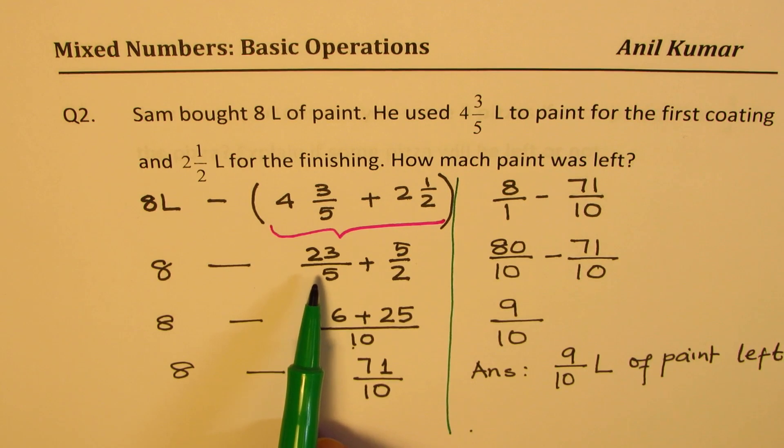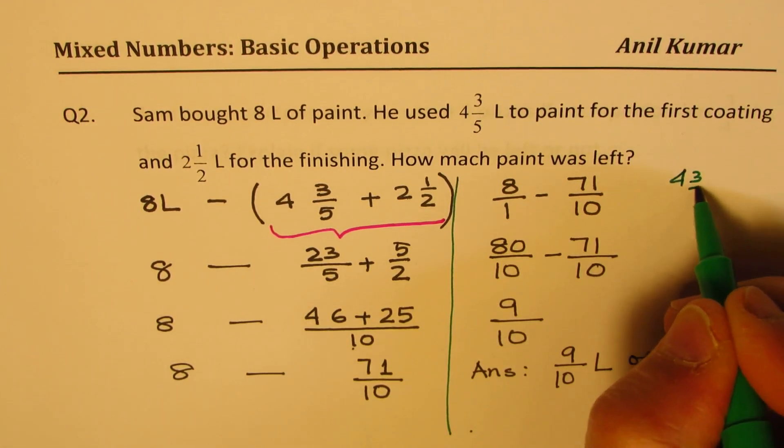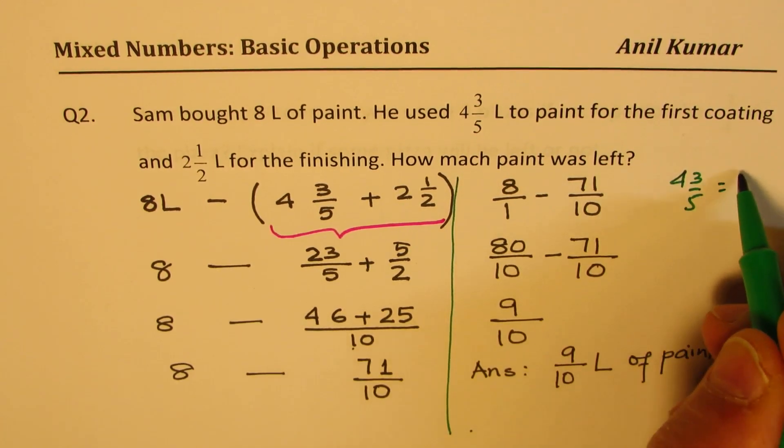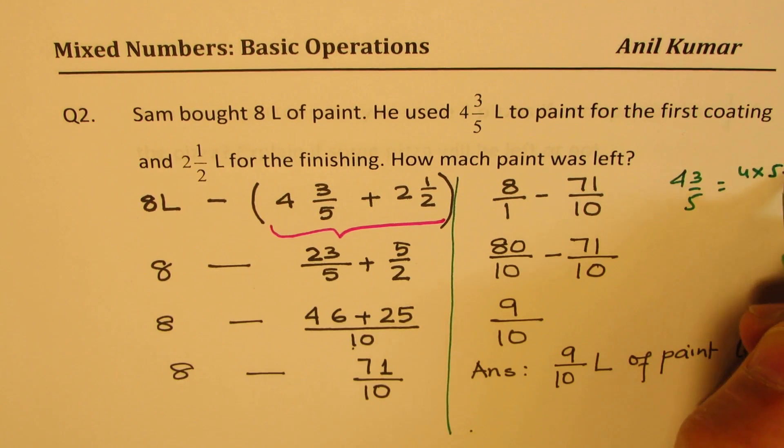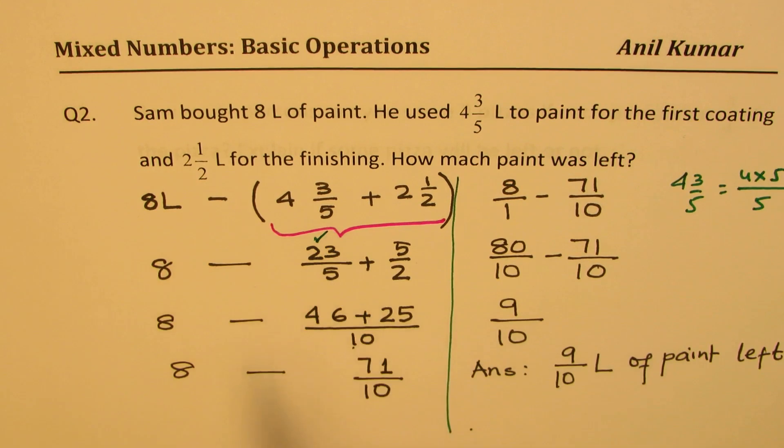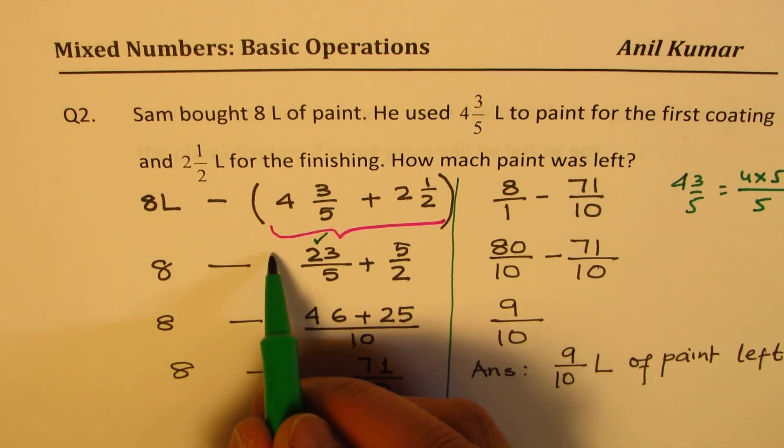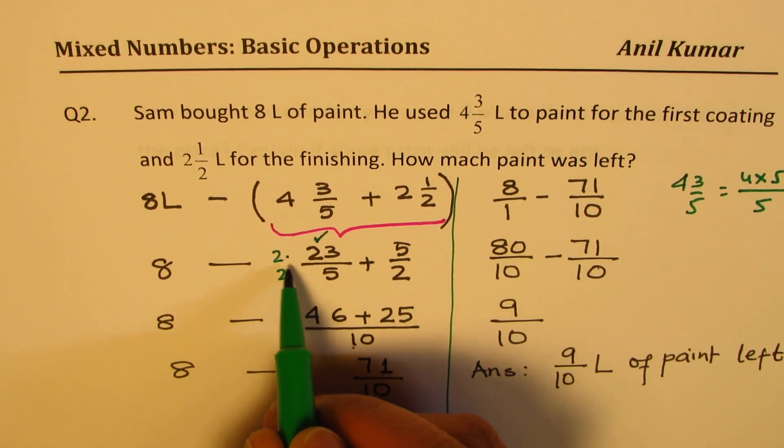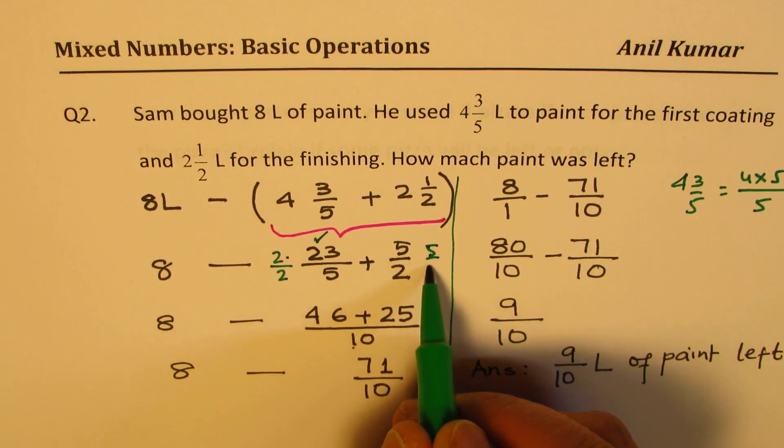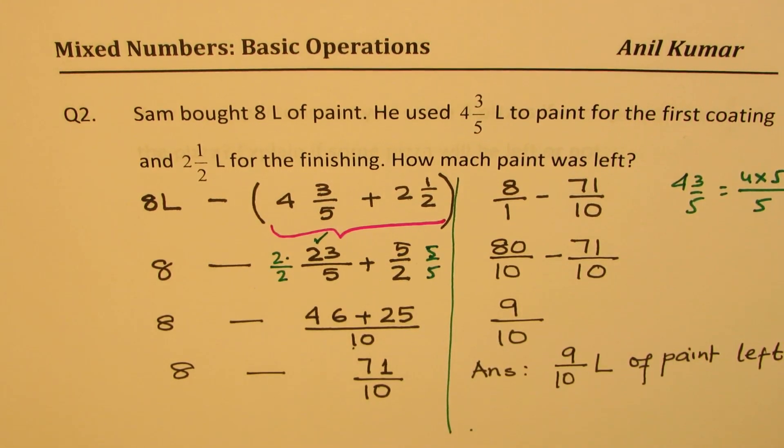Is that clear to you? So I hope you understand what we did here. First, we converted them into improper fractions. How do we get 23? We have 4 3/5, we multiplied 4 and 5 and then added 3 to get the numerator, which was 23. Likewise, we did here. Now, both we made the denominator as 10. We multiplied these terms by 2 over 2, and these by 5 over 5 to get our results. So I hope all the steps are clear.